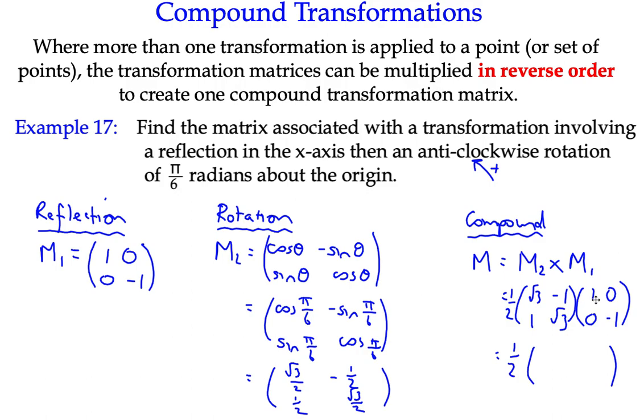So √3 times 1 is √3 plus negative 1 times 0 is 0. That gives me √3. The second element here, √3 times 0 is 0 plus negative 1 times negative 1 is positive 1. And down in the bottom row, 1 times 1 is 1 and then the other term is 0. And then here I've got negative √3. So here we have a matrix which is the combination of those two operations.